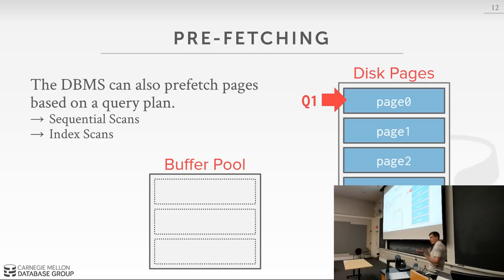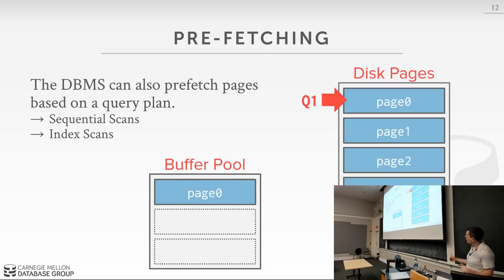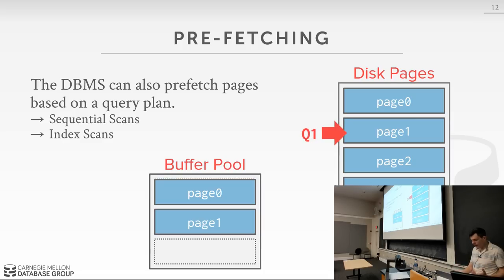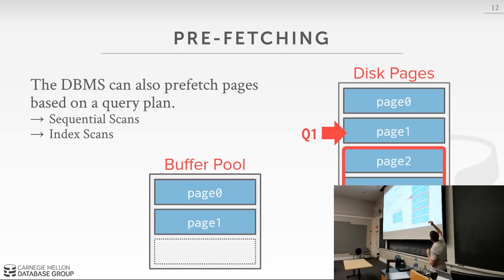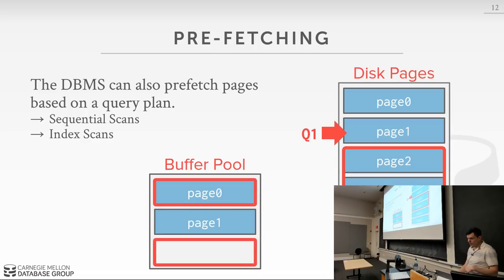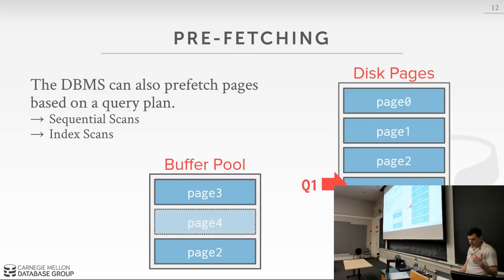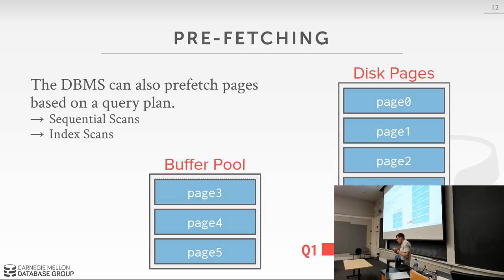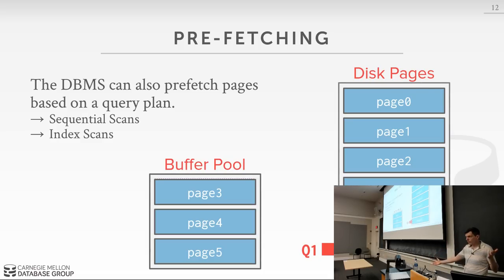For a simple query doing a sequential scan across the entire table with pages 0 to 5, the buffer pool starts empty, so we fetch page 0, then keep going. If we recognize the query will read every page, we can prefetch pages 2 and 3 while accessing page 1, so that when the query keeps scanning, it doesn't stall because the next pages are already in the buffer pool. The OS can sometimes do this for sequential file access, but not every database access pattern is sequential.